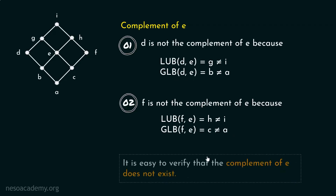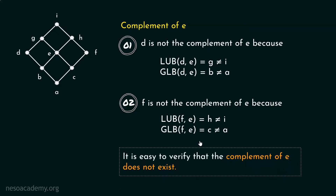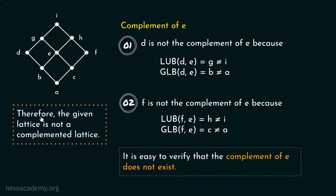You can verify that the complement of E does not exist — this particular element has no complement at all. Therefore, the given lattice is not a complemented lattice.